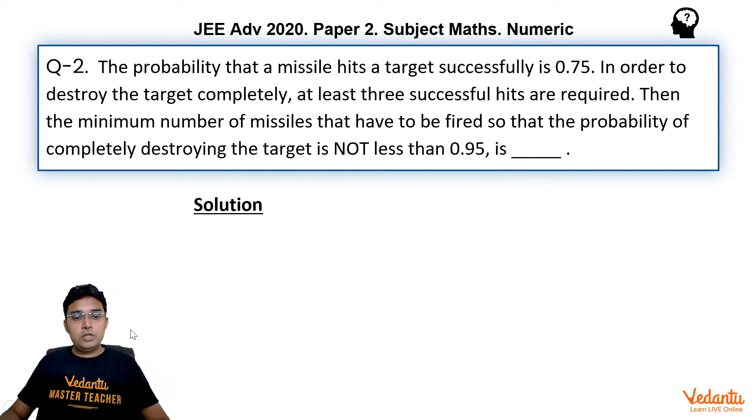So let us see how to do this question. We are given that whenever we hit the target, the success probability is 0.75. So we can call this as p and it is 3 by 4. And hence, every time you hit the target, probability of not getting the success will be 1 upon 4.